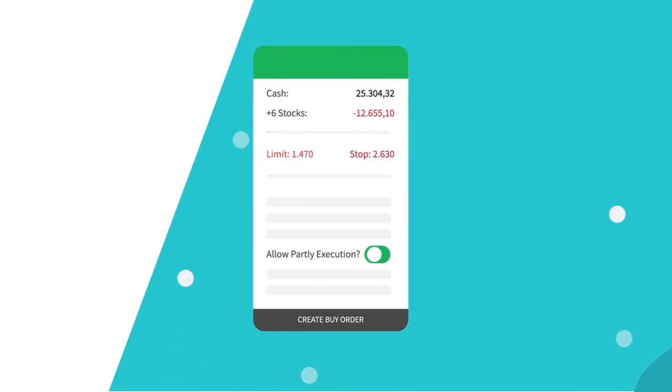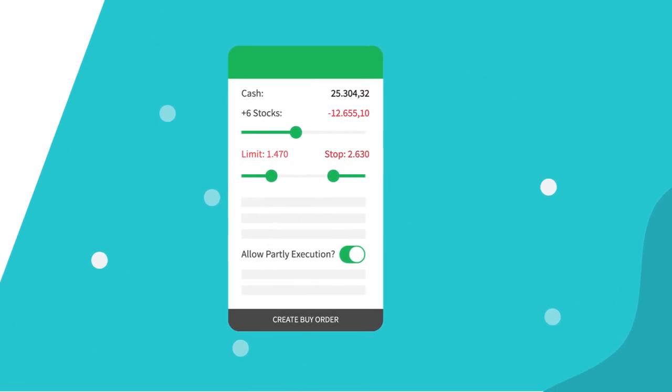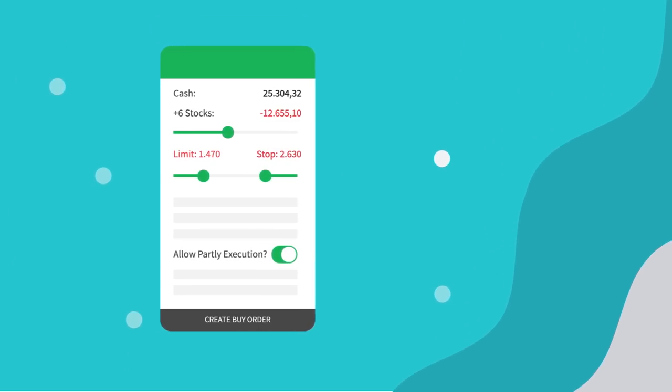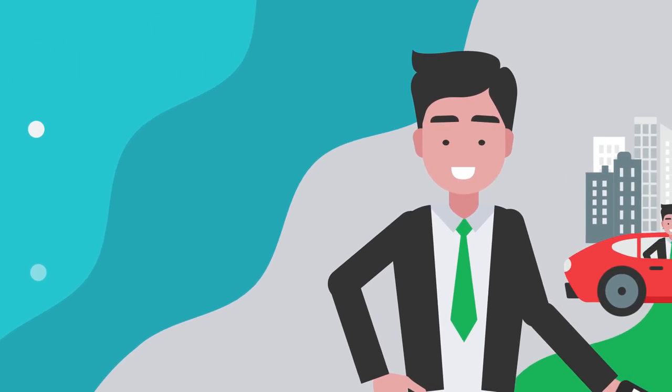You might have noticed that there are some options in the order screen that we haven't explained to you yet. This is the video to help you understand that. Let's start with an example.